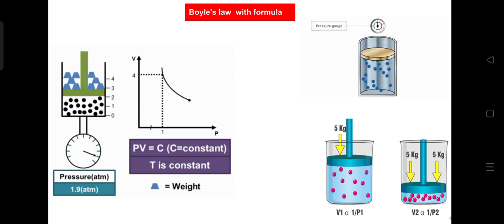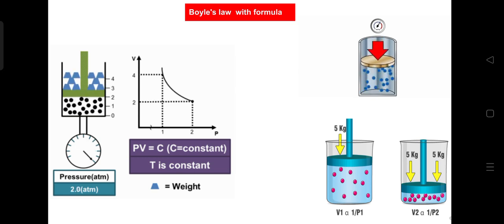Boyle's law states that at a constant temperature, the pressure of a gas is inversely proportional to its volume. In simpler terms, as the volume of a gas decreases, its pressure increases, and vice versa.